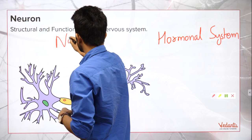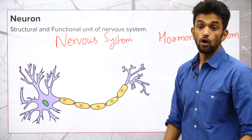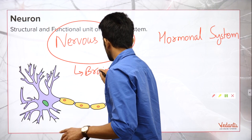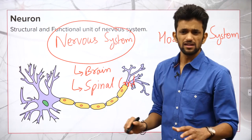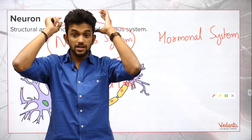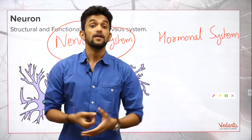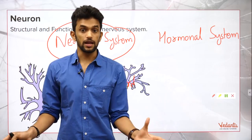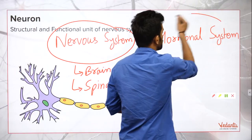The nervous system basically relates to the brain, spinal cord, and various nerves coming out of the brain and spinal cord. You can imagine wires coming out of my brain and spinal cord — those are the nerves. They help in connecting my body. That is the nervous system. The other system is the hormonal system — a system of chemicals called hormones.